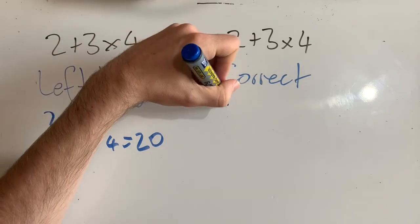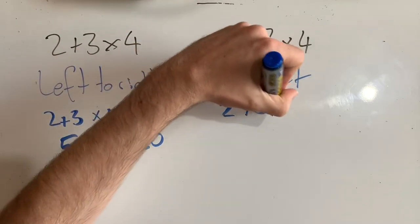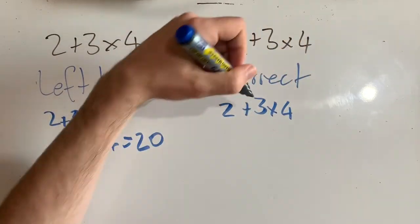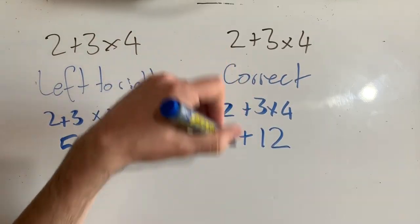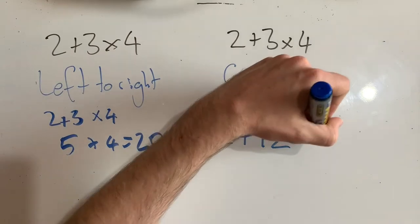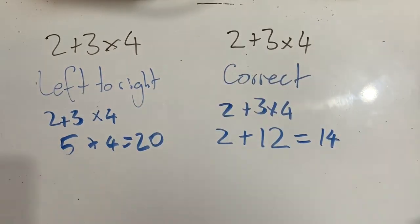So 2 plus 3 times 4, I'm going to do the 3 times 4 first. So now I end up with 2 plus 12, and now I can add these together, which is 14. Now, this is the correct way to do it. But why? Well, that's because we have some rules and that includes our orders of operation.